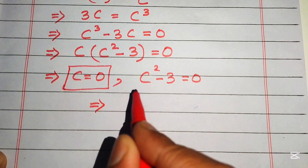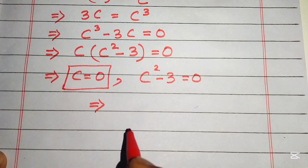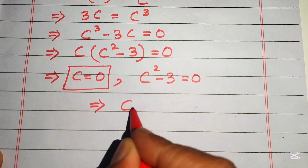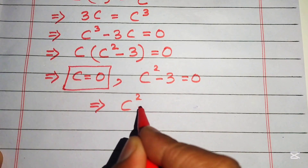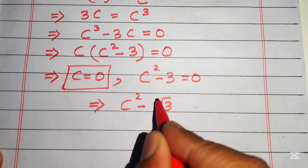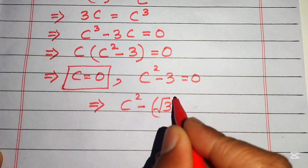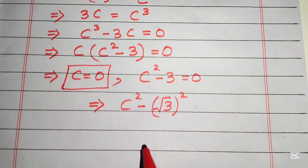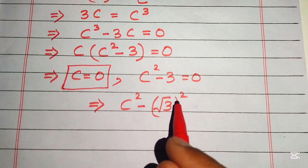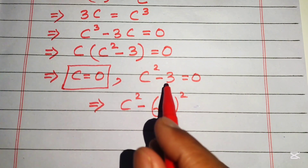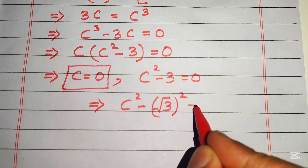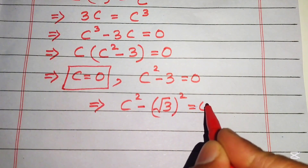We rewrite three as the square root of three squared — that is, we apply a square root and a square simultaneously — so the equation becomes c squared minus the square root of three squared equals zero.